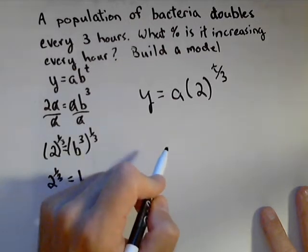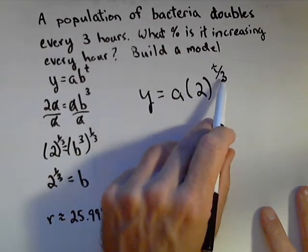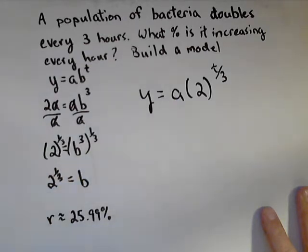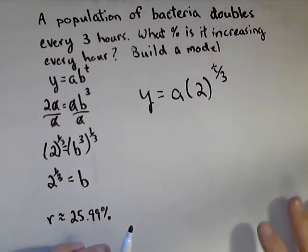Same thing works with half-life. We would put a one half in here, whatever the half-life is here, and the initial amount here. So it's a nice shortcut for whenever you're dealing with doubling time, tripling time, half-life, quarter-life. You can always use that to build a model real quick.